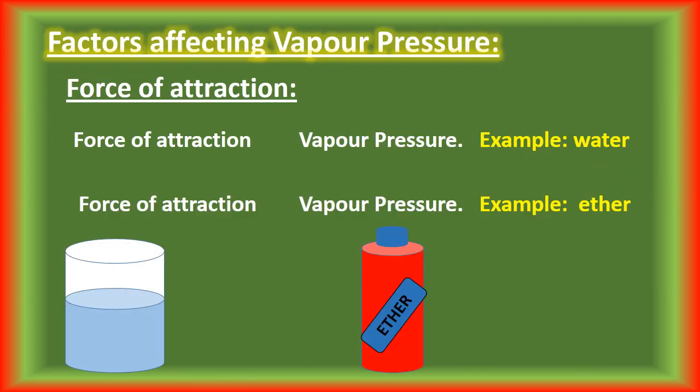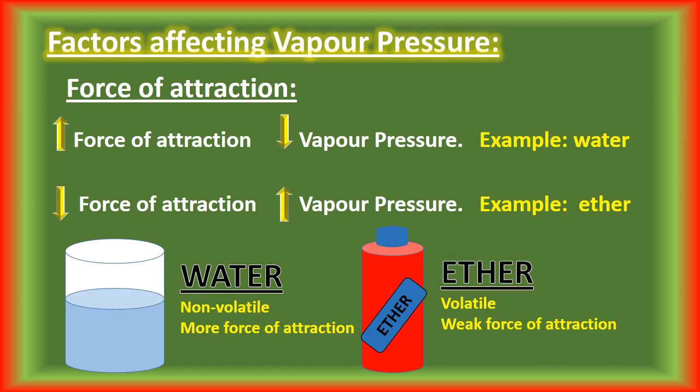Factors affecting vapor pressure. The first factor is the intermolecular force of attraction. Vapor pressure depends upon the nature of the liquid — different liquids have different intermolecular forces. Liquids with stronger intermolecular forces show low vapor pressures, for example water. Liquids with weaker intermolecular forces show high vapor pressure, for example ether. Water is non-volatile because it has strong hydrogen bonding, whereas ether is volatile due to weak London forces. Therefore, the vapor pressure of water is lower than that of ether.